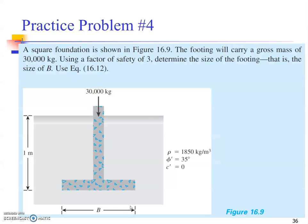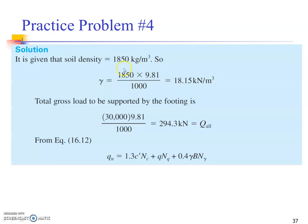Next, a simple problem: a square foundation is shown in Figure 16.9. The footing will carry a gross mass of 30,000 kilograms. Using a factor of safety of three, determine the size of the footing, the size B. Use equation 16.12, the general bearing capacity equation used for Hansen, Meyerhof, or Vesic model. Soil property phi is mentioned. Multiply with g to become kilonewtons per cubic meter. The total cost load to be supported is the allowable load in kilonewtons, and he's using the service model.